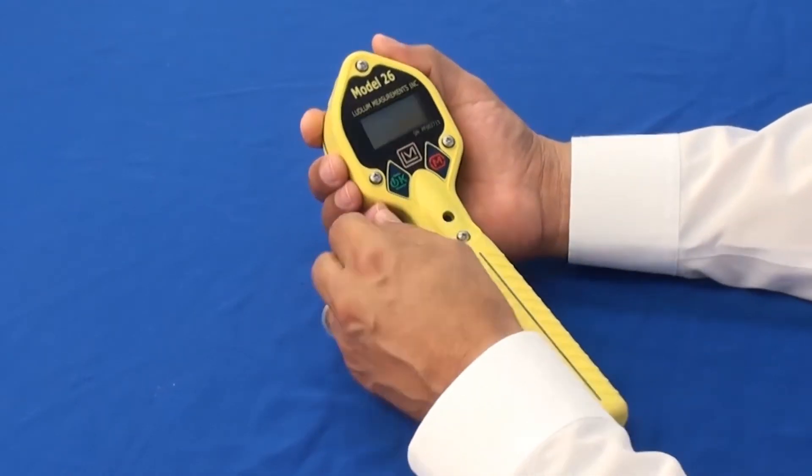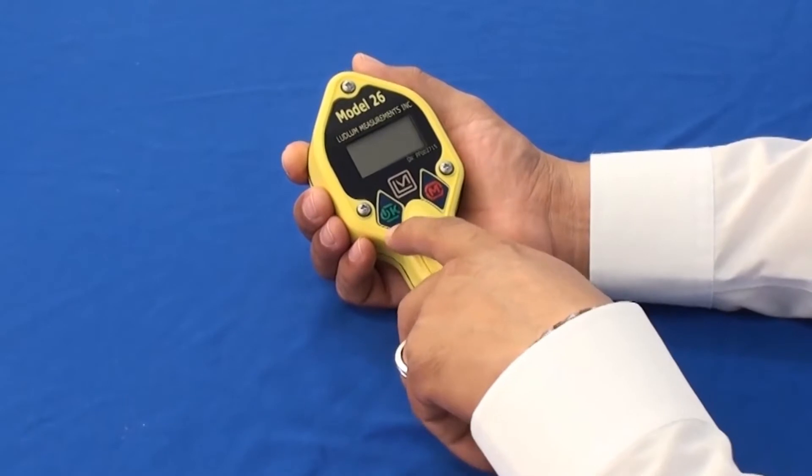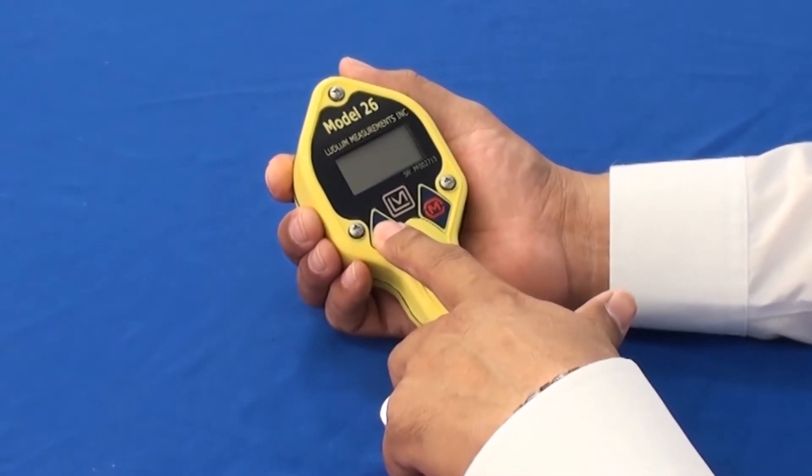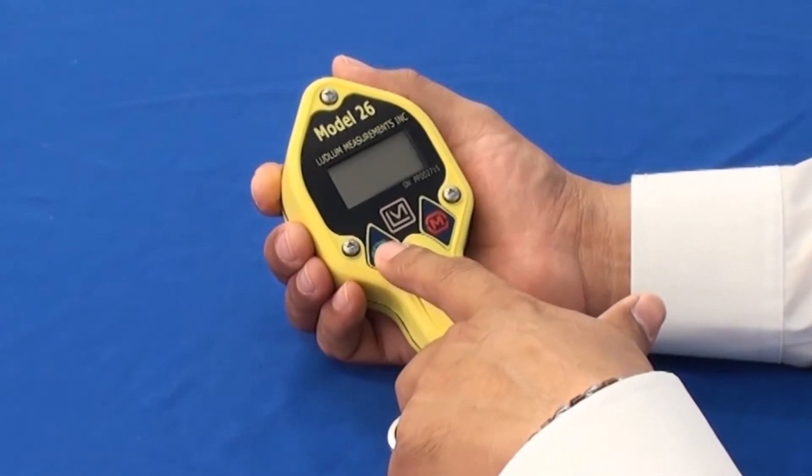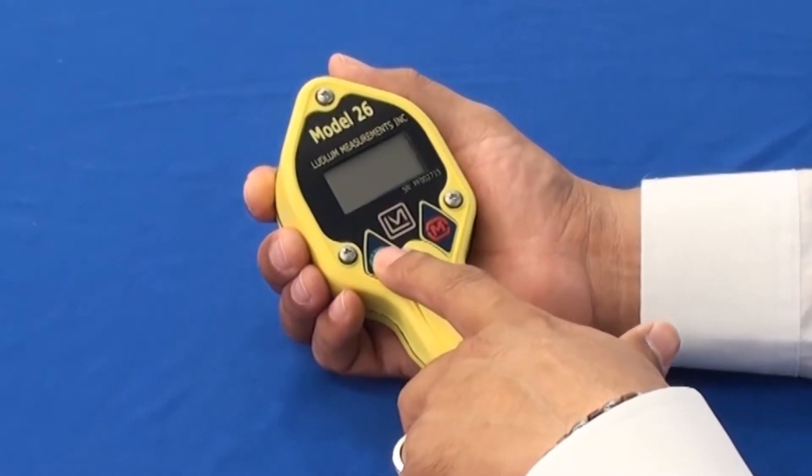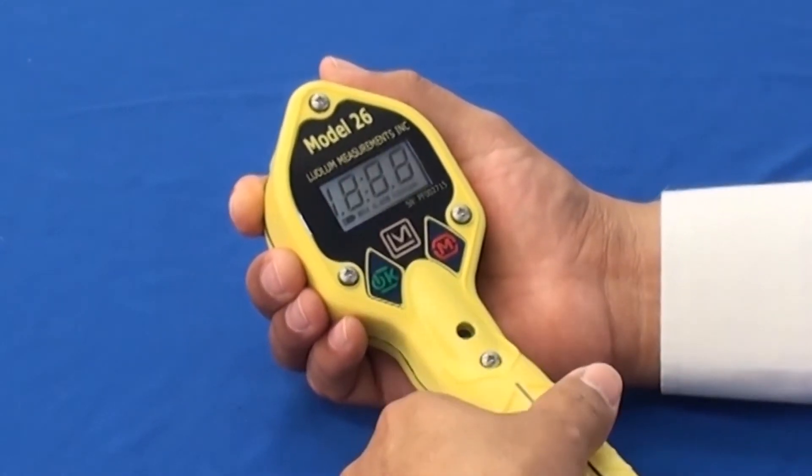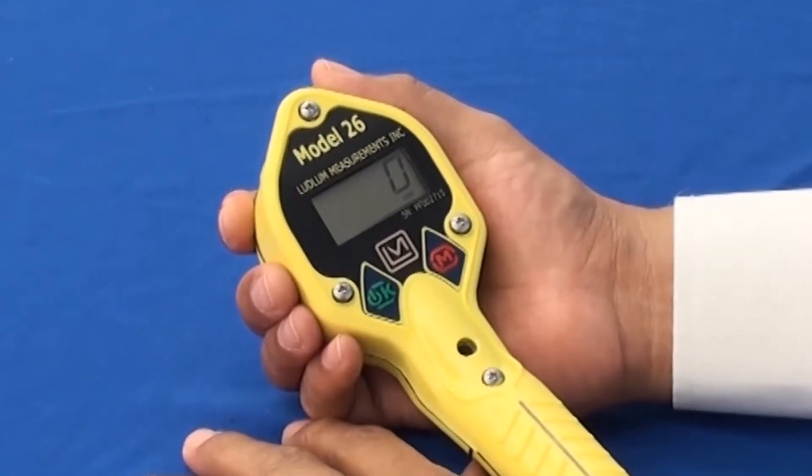Once again, here is the Model 26. All functions begin by pressing the power switch and releasing. Upon pressing the power switch, you will note all the segments in the display will light up and we'll finish showing you a three-digit firmware number and then it'll go to a normal display. 008 is the firmware number and now we're in normal display.